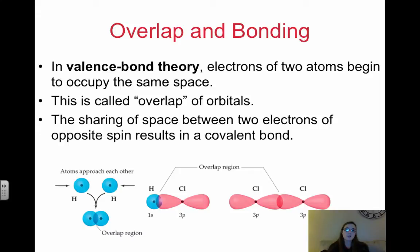So in valence bond theory, electrons of two atoms start to occupy the same space, and this is called the overlap of orbitals. So what happens is some of your s orbitals and p orbitals in a covalent bond start to come together and overlap. So the sharing of the space between these electrons that have opposite spin is what results in a covalent bond.